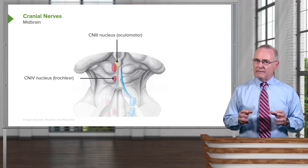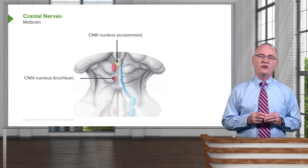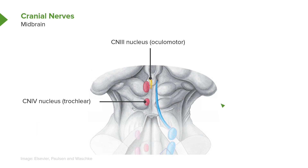The second and final cranial nerve nucleus found in the midbrain is associated with the trochlear nerve — cranial nerve four. You can see it identified right in through here. From this nucleus, the trochlear nerve leaves the posterior aspect of the midbrain and innervates the superior oblique muscle, one of the extraocular muscles.